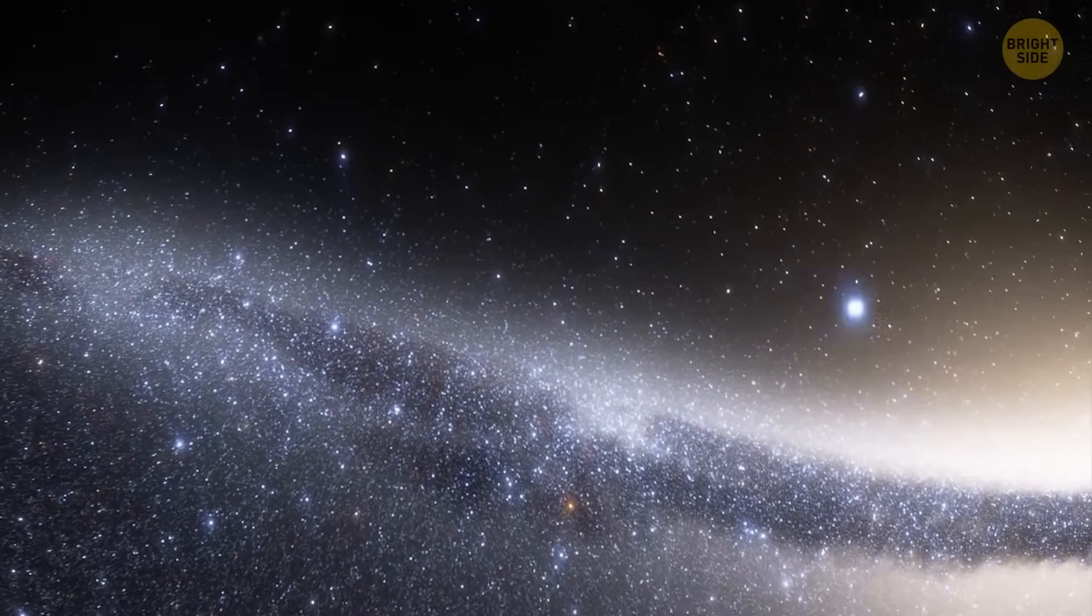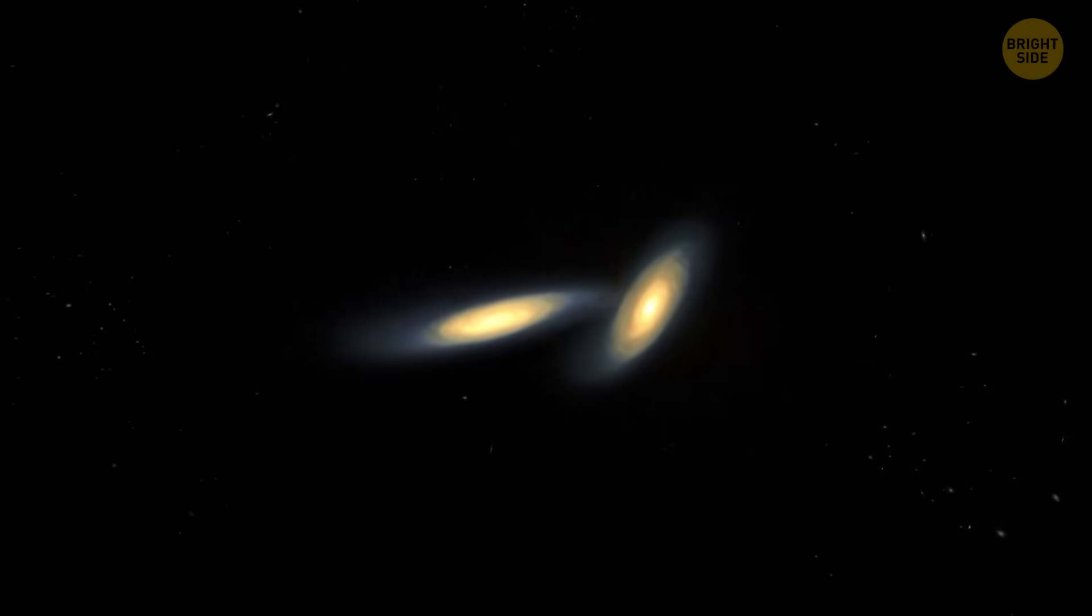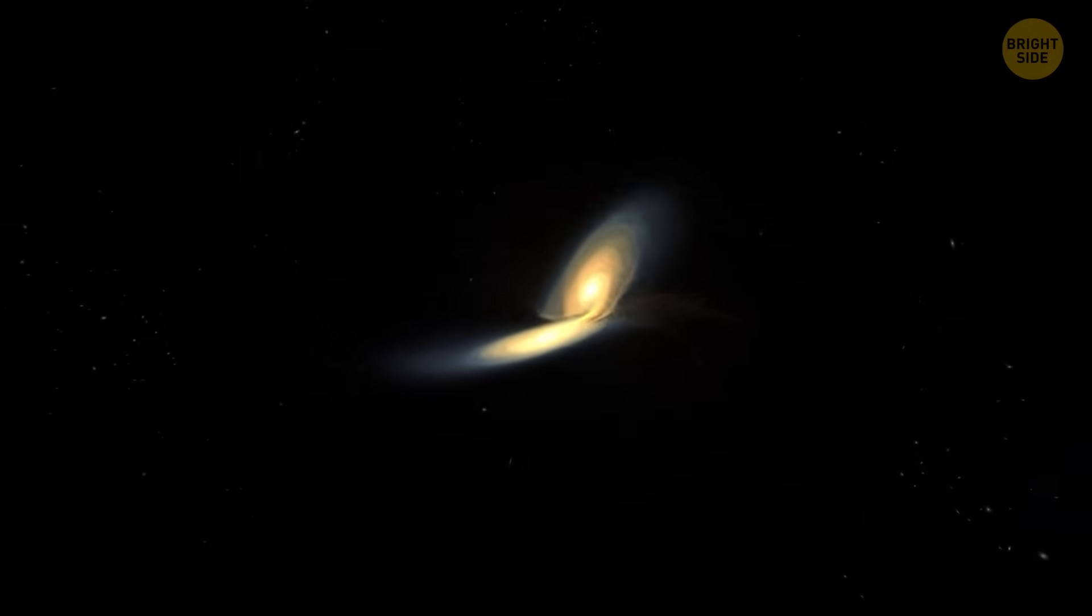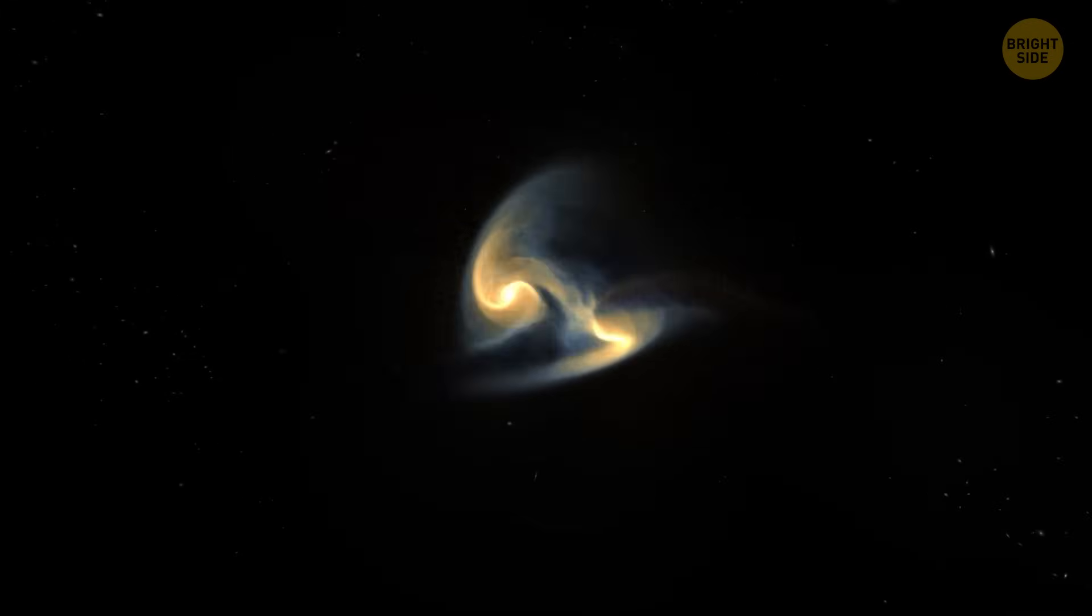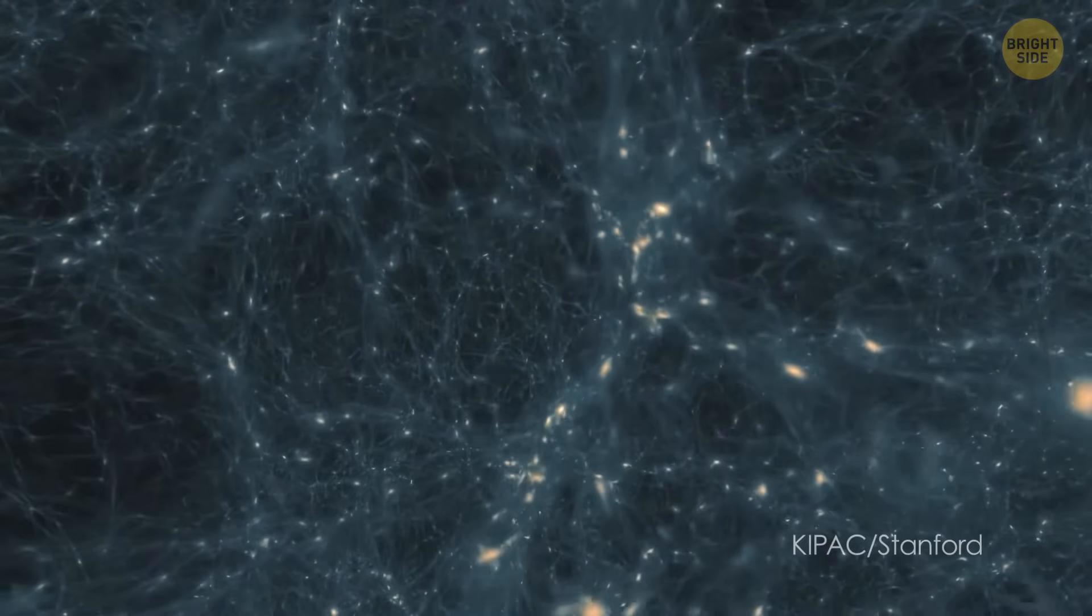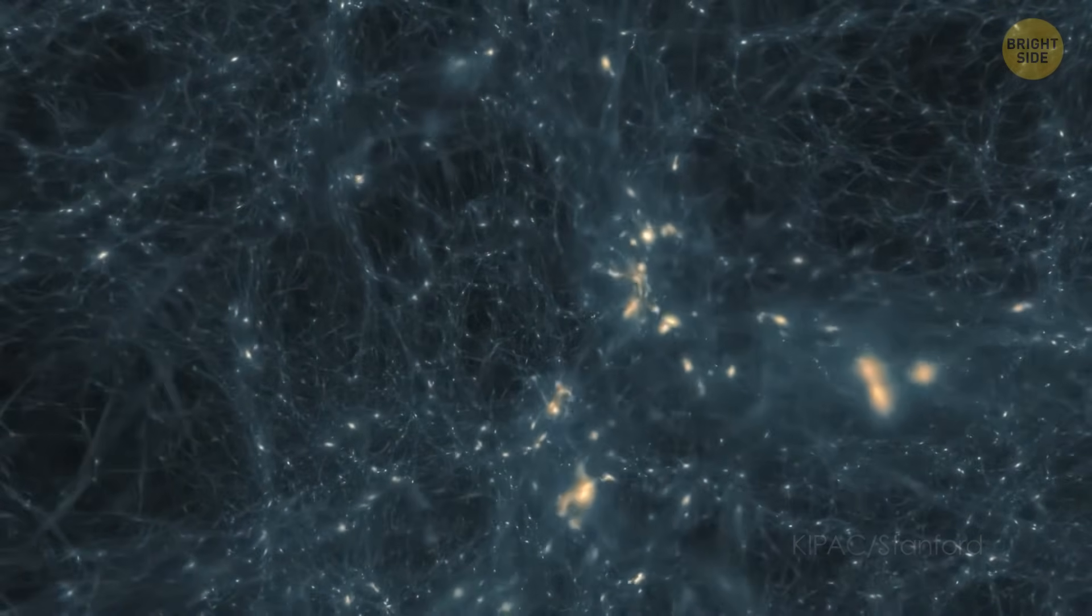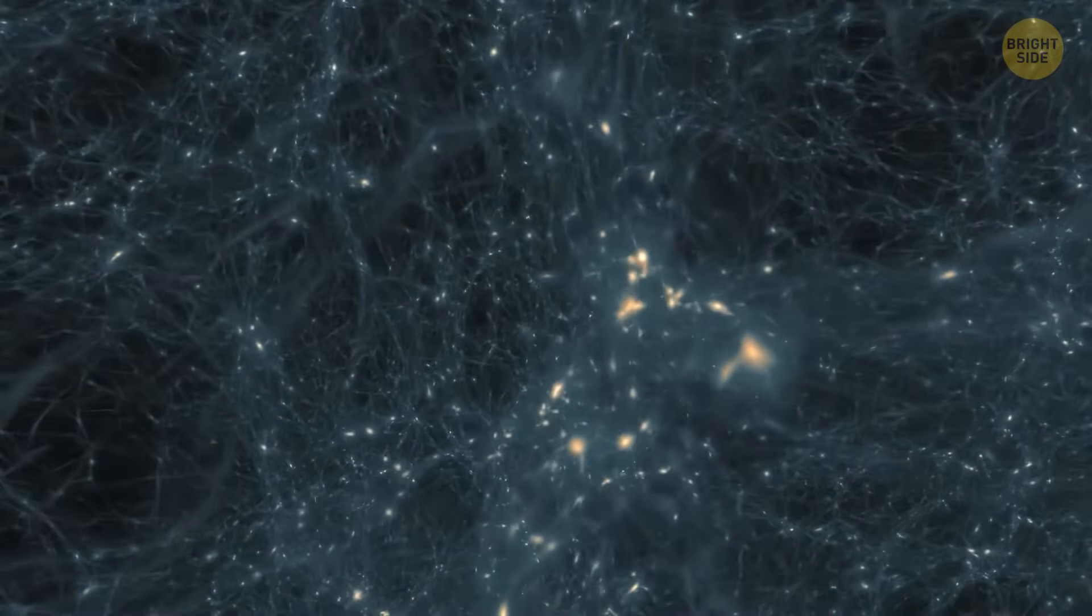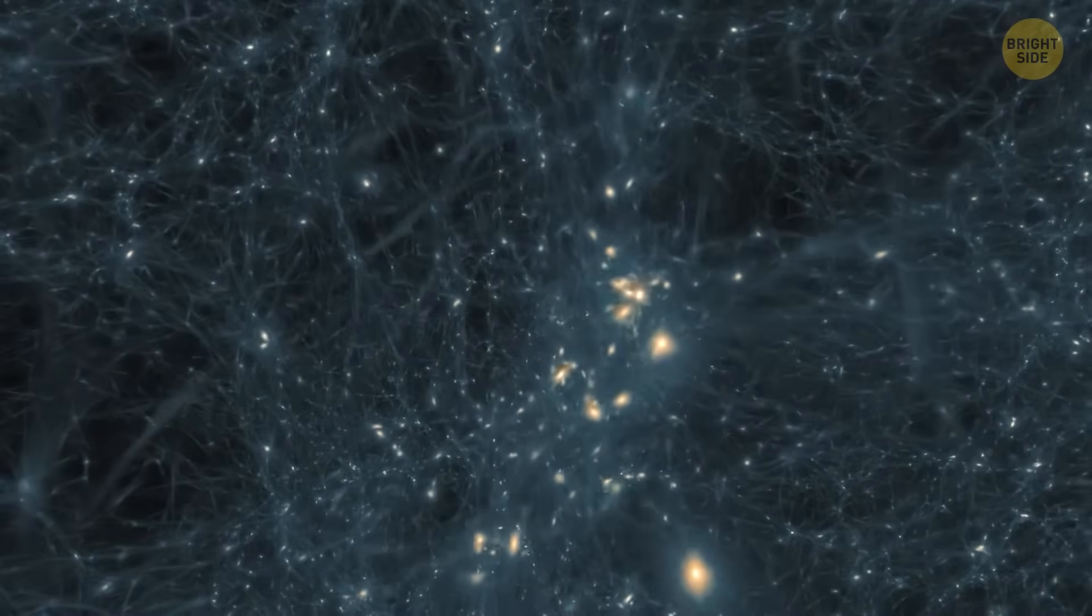But what causes the warp? These deformations may result from ancient galactic collisions, like the Milky Way's collision with the Sagittarius dwarf galaxy around 6 billion years ago. However, a new study suggests another possibility. The warp might be caused by a tilted dark matter halo surrounding our galaxy.